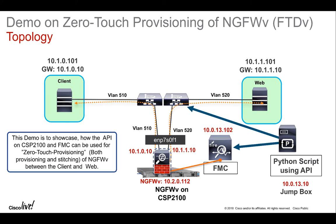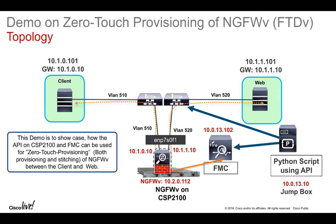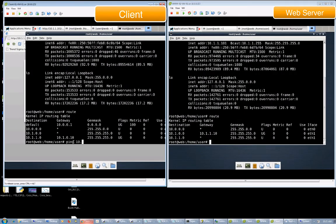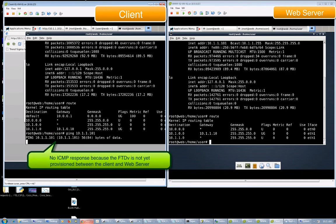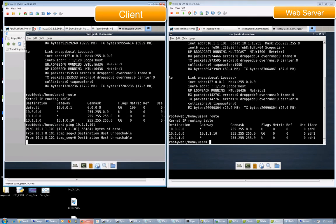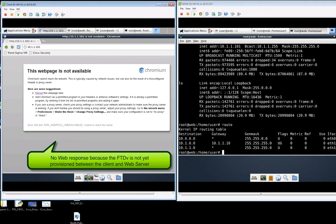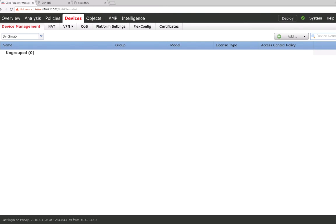I've used this Python script to provision this next generation firewall virtual on the CSP2100, as well as to register the FTD on the Firepower Management Center, and also configuring the interfaces and policies through the API. I'm going to ping from the client to the web server. The ping is not successful, and HTTP from the client to the web server is also not successful because we haven't provisioned this FTD between the client and the web server network. The FMC is also not associated with any device yet.